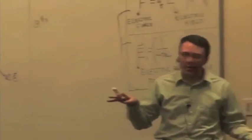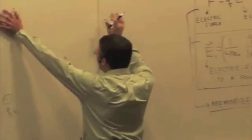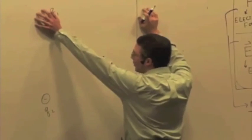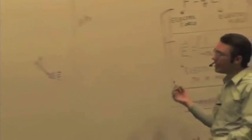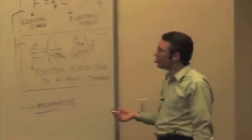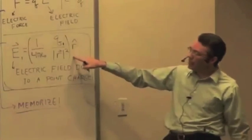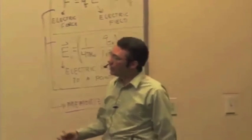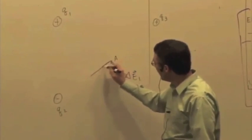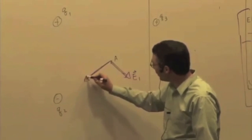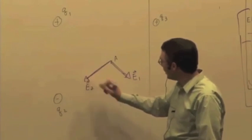And then I move on to the next charge. I ignore the presence of Q1 and Q3 and I just think about Q2 and find the electric field due to Q2, just using again this field of a point charge formula. Q2 would have an electric field pointing towards it, maybe of that magnitude, call that E2.